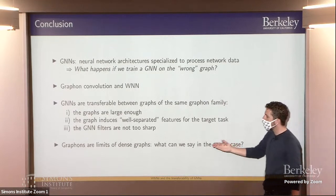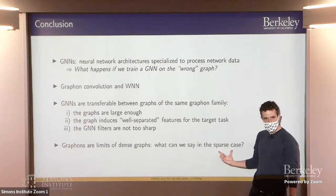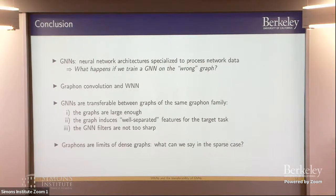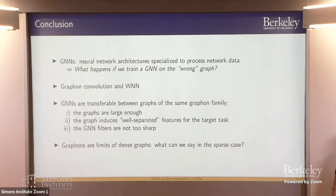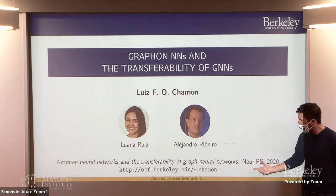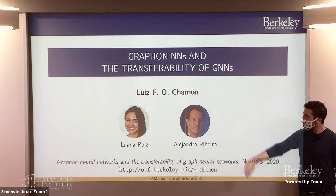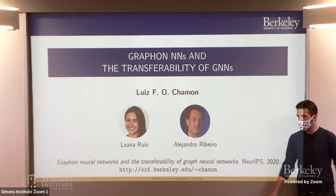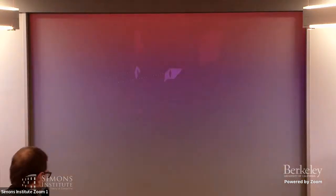An ongoing question, raised by Peter, concerns graphons as models for dense graphs since they are node-exchangeable models. What can we say in the sparse case? Can we do better or worse, and what are the analogous bandwidth properties that control the error? For more, there is a recent paper from last year, available on the speaker's or Luana's website — Luana being the lead on this project.